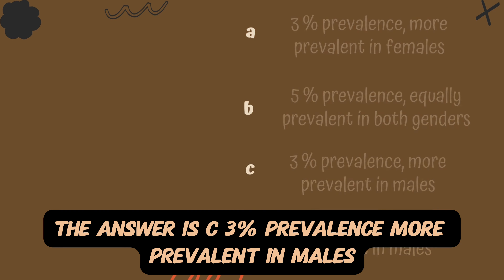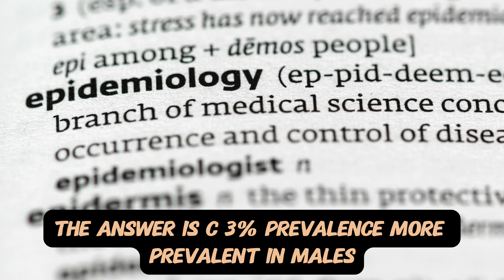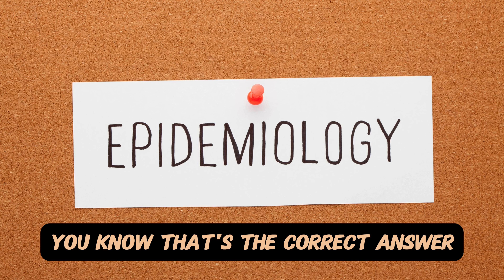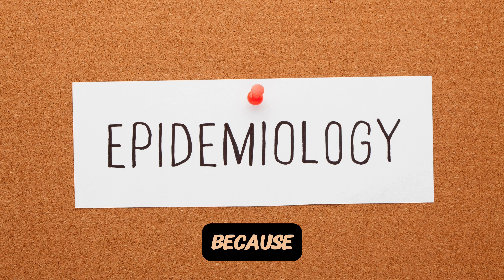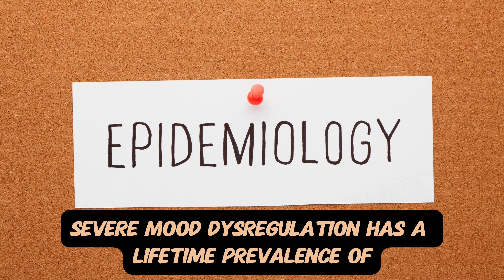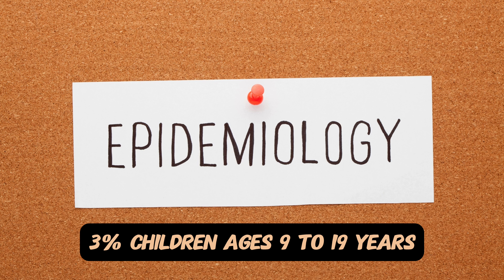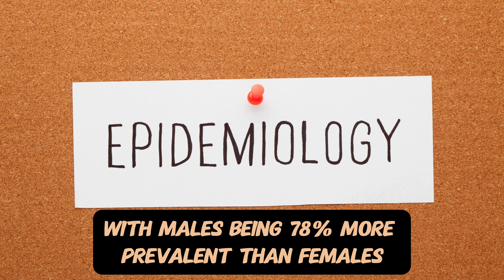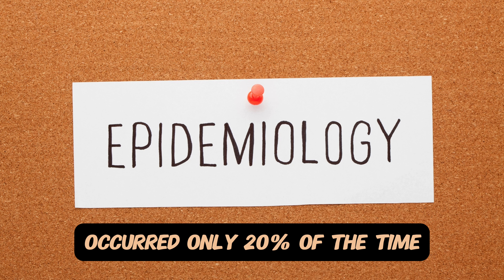The answer is C. 3% prevalence, more prevalent in males. Severe mood dysregulation has a lifetime prevalence of 3% in children ages 9 to 19 years, with males being 78% more prevalent than females, with females occurring only 22% of the time.